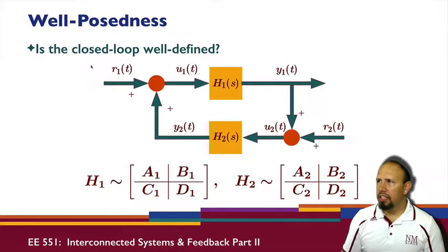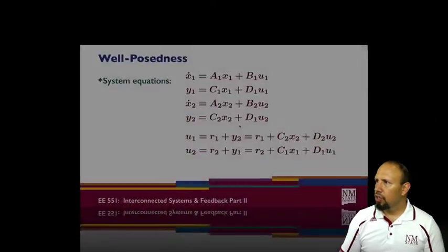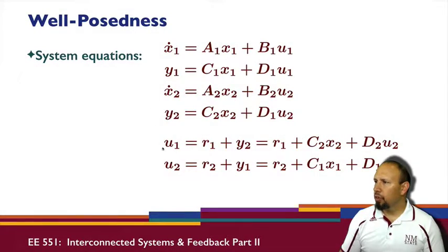The issue of well-posedness - and the question is, is this closed-loop well-defined? And so in general, this is my H, this is my H1, H2, and so I have this configuration. So these are the state models for those, and these are the control signals. So notice U1 is a function of U2, U2 is a function of U1, and so we have these two relationships.